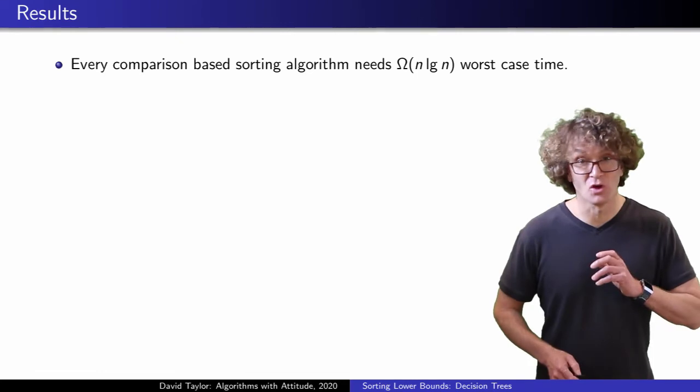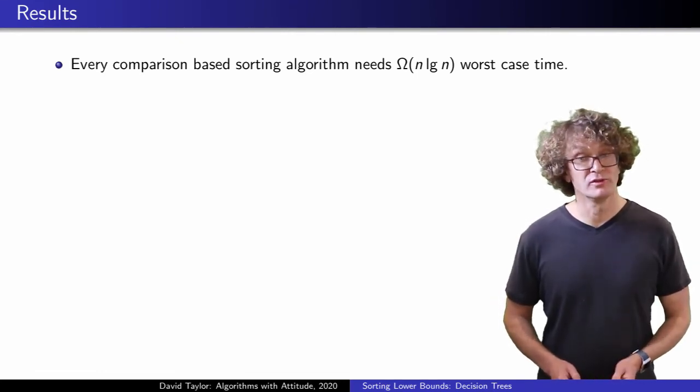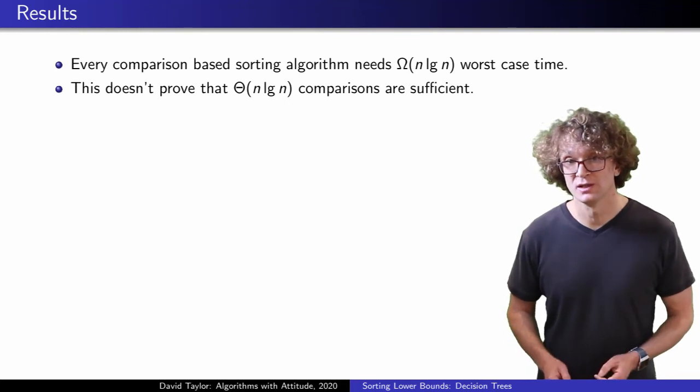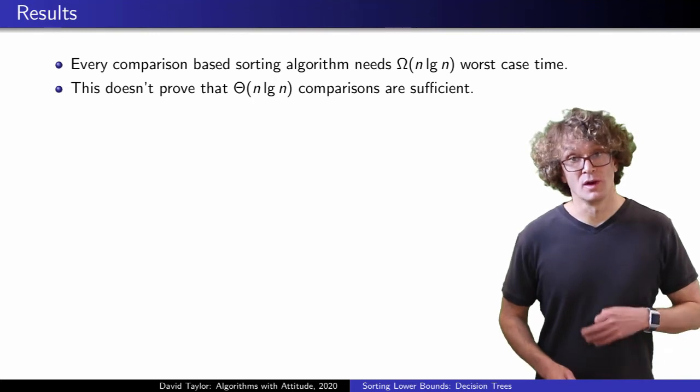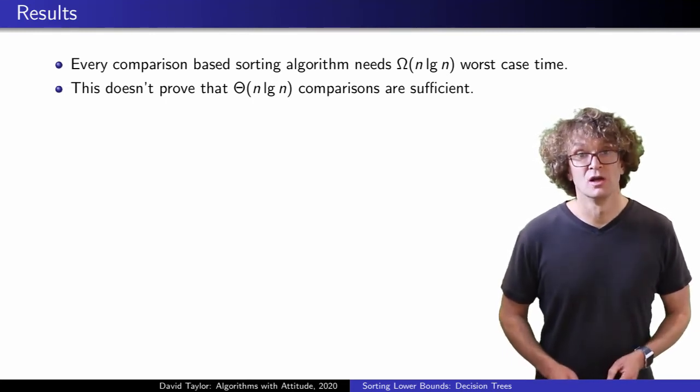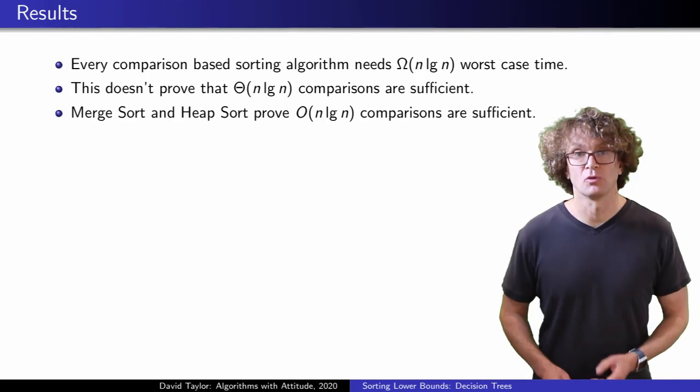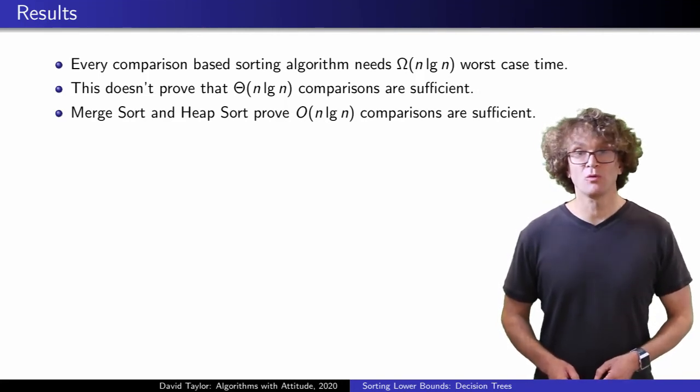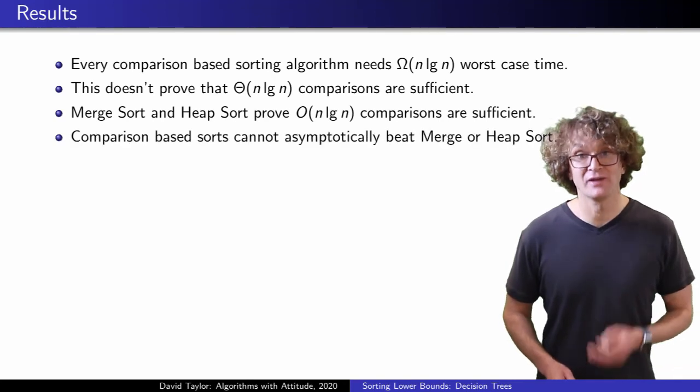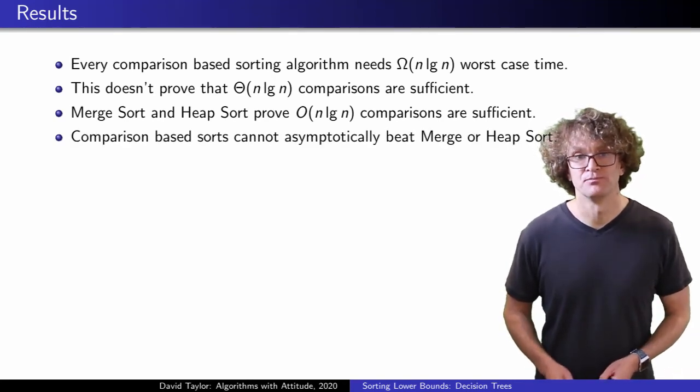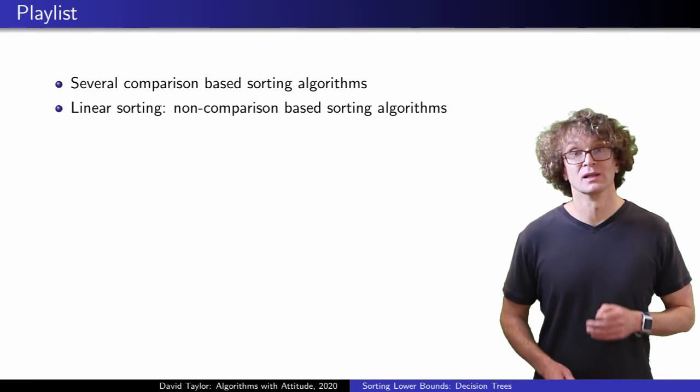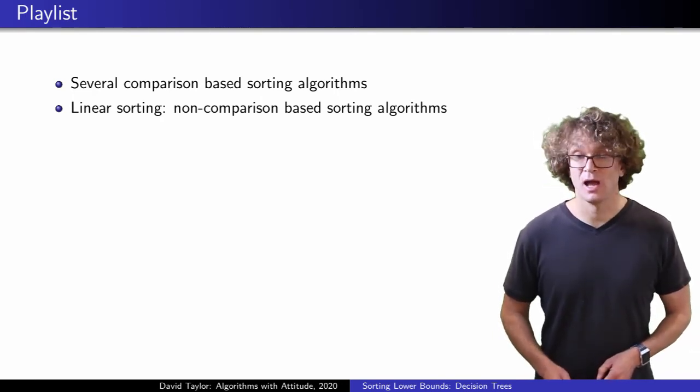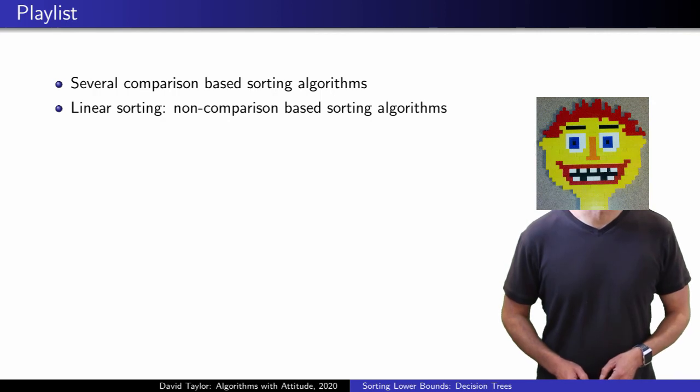That's it. That's the whole argument. It doesn't prove that n log n comparisons are sufficient, it just proves it as a lower bound. Of course, we know that order n log n comparisons are sufficient, because merge sort and heap sort both follow that bound, so you won't find a general sorting algorithm asymptotically faster than them. Besides comparison-based sorts, the playlist does have some non-comparison-based sorts in the linear sorts video, but for now, time to go update those profiles. Good luck.